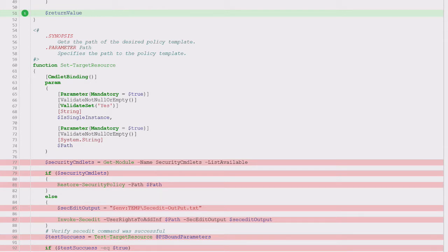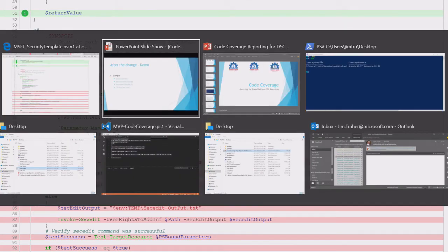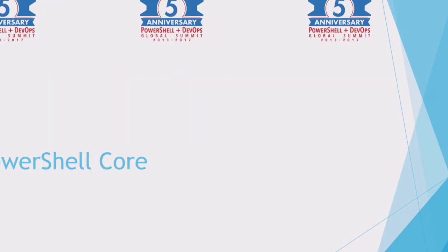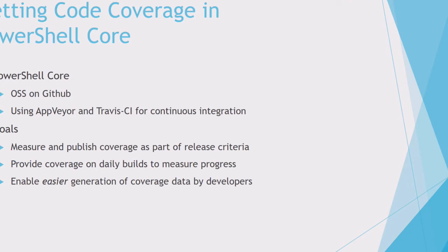I'm going to talk about the path we took to get code coverage on Open PowerShell. PowerShell Core is an open source project. We actually use AppVeyor and Travis CI for our CI system, and that had some implications for us with regard to code coverage.